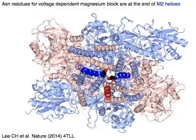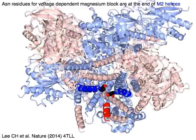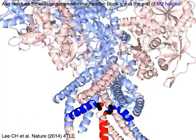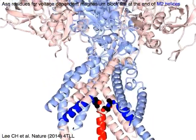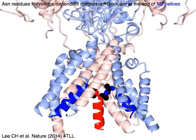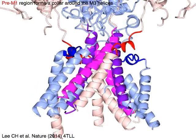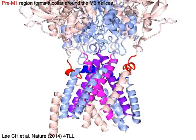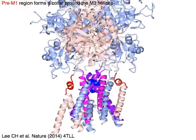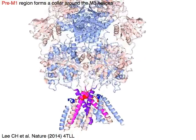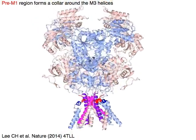Asparagine residues responsible for voltage-dependent magnesium block are located at the ends of M2 helices in red and blue. The pre-M1 region in red or blue forms a collar around the M3 helices in magenta or purple.